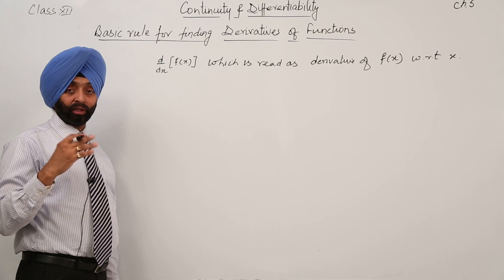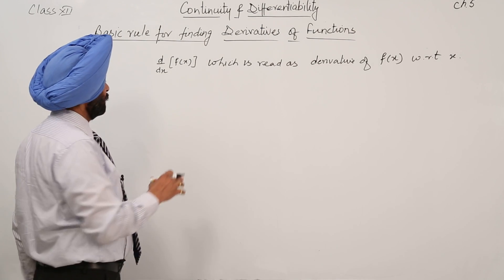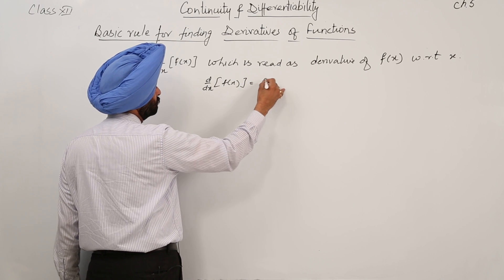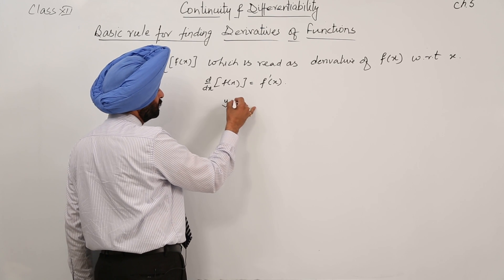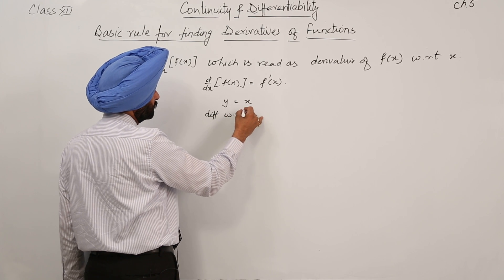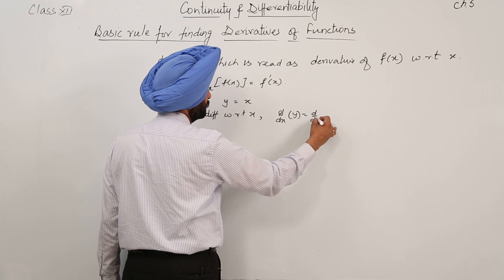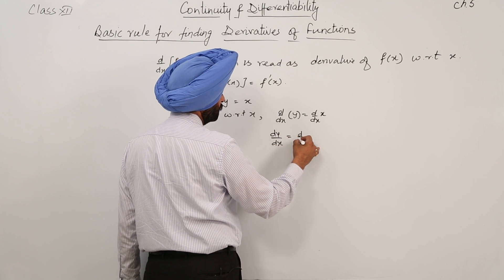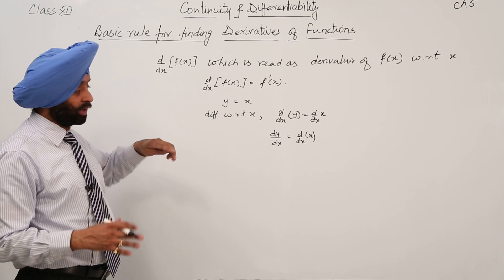If it is written d upon dy, then we read it as differentiation with respect to y. Now, d by dx of f(x) equals f'(x). Another way: if y = f(x), then differentiating with respect to x gives dy by dx = d by dx of x. So dy/dx and d/dx of f(x) are one and the same thing.